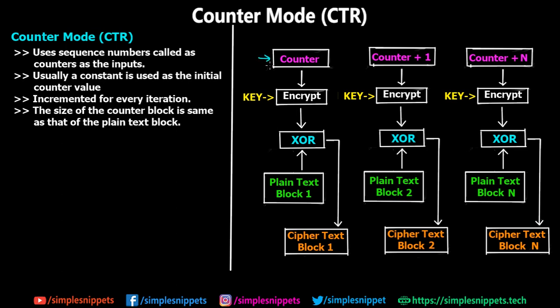As you can see in this diagram, the counter is a random string input — a number following a certain sequence. It uses sequence numbers called counters as the input. Usually a constant value is used as the initial counter value, and after every iteration the counter value is incremented by one or by a particular constant value.